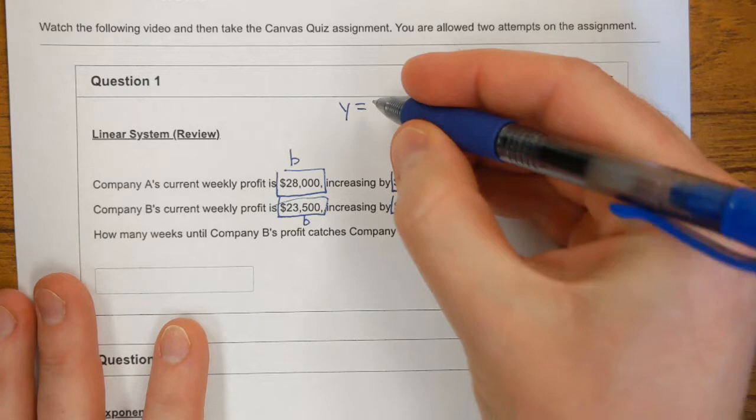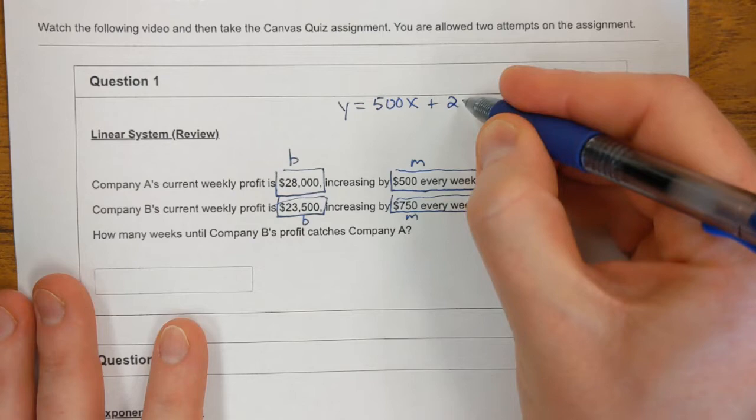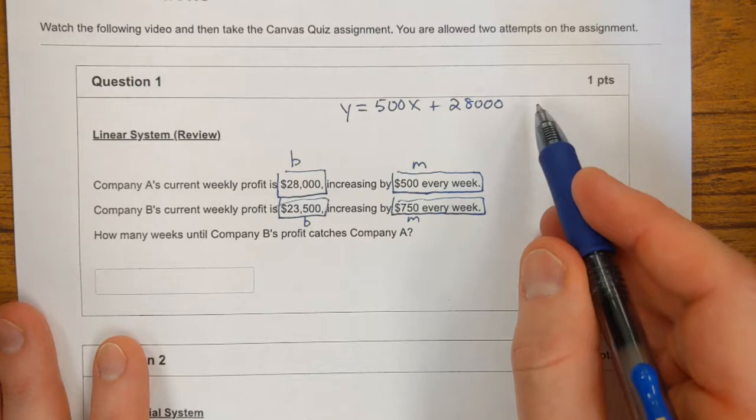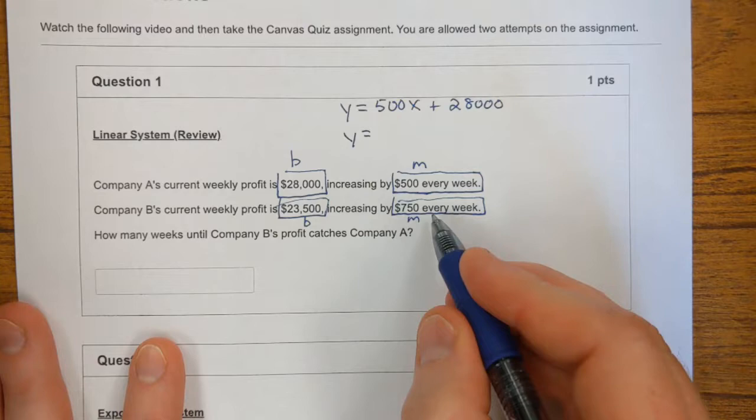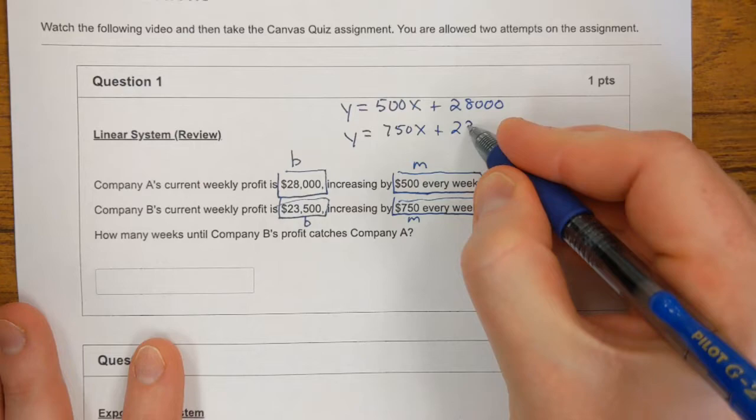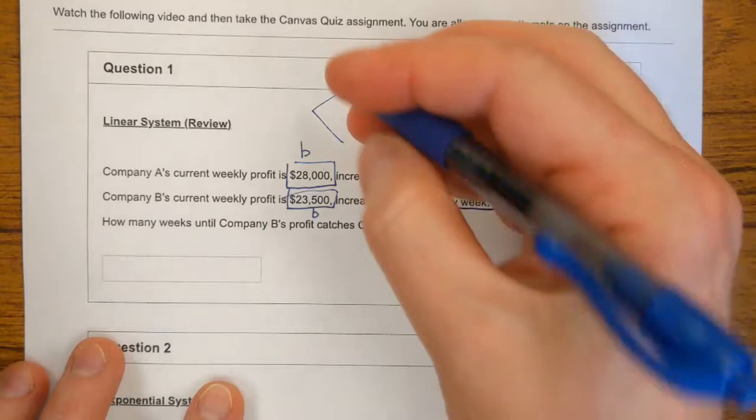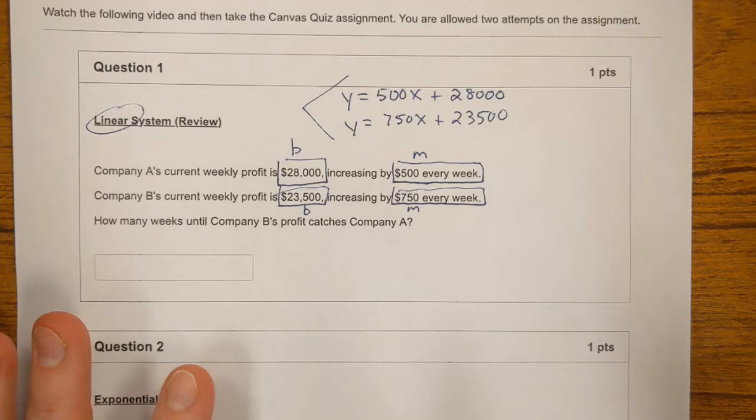Well, let's review how to solve this. It's called a system. So company A, we write out the slope is $500. Its starting weekly profit is $28,000. Here's how we write this company as a function. Here's the formula for this company. Now company B, the slope of it is $750. And it starts at $23,500. Now, if you recall, this is called a system. This is linear growth here. So this is a linear system.